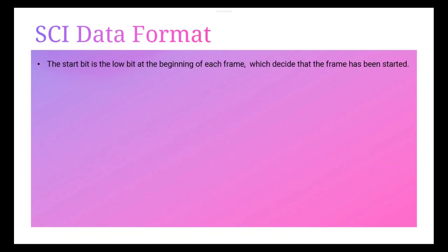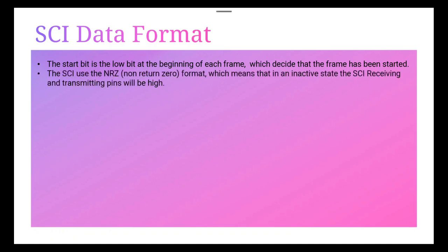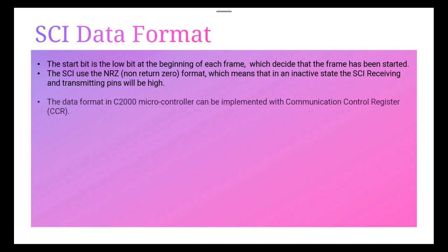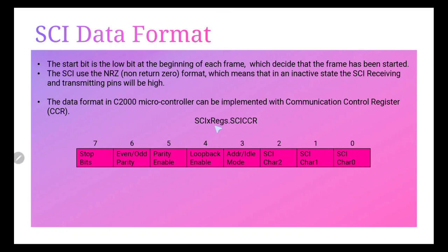The start bit is the low bit at the beginning of each frame, and it signals that the frame has started. The SCI uses the NRZ (non-return-to-zero) format, which means that in an inactive state the SCI receiving and transmitting pins will be high. The data format for the C2000 microcontroller can be implemented with the communication control register, written as SCIx.SCICCR.